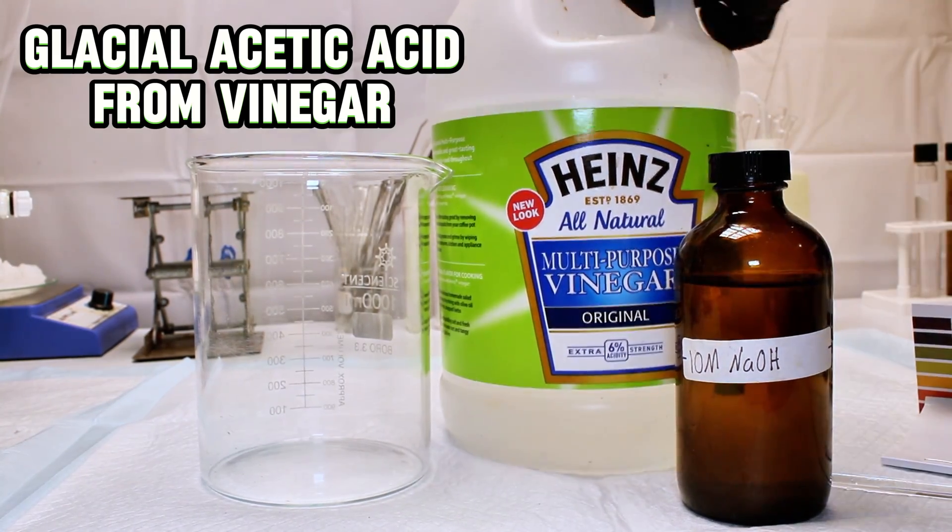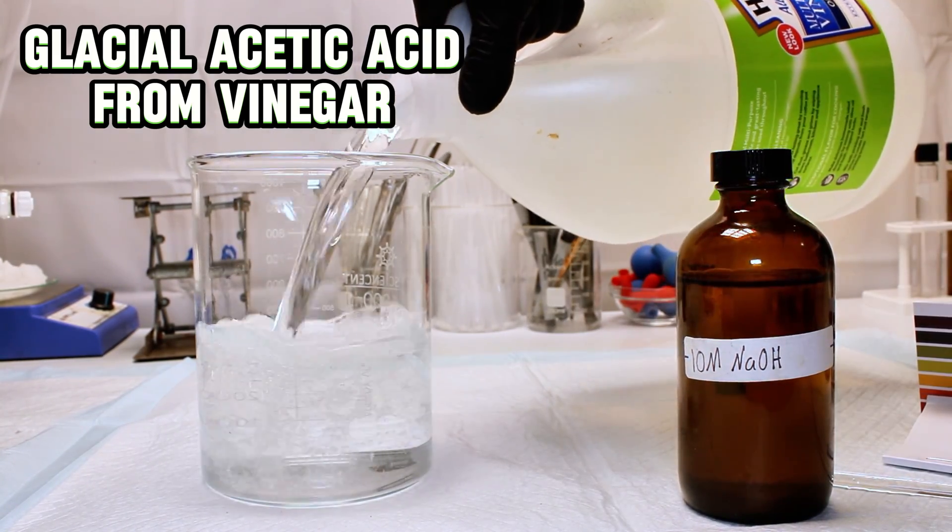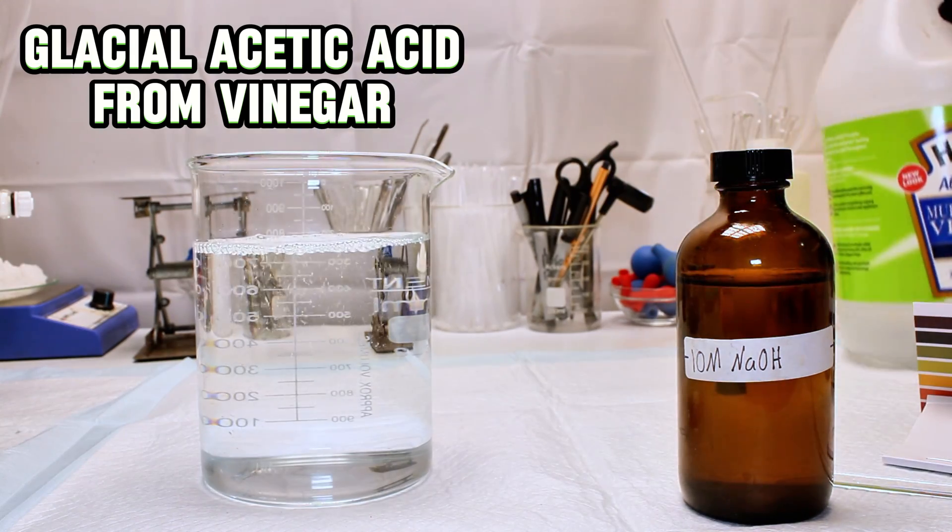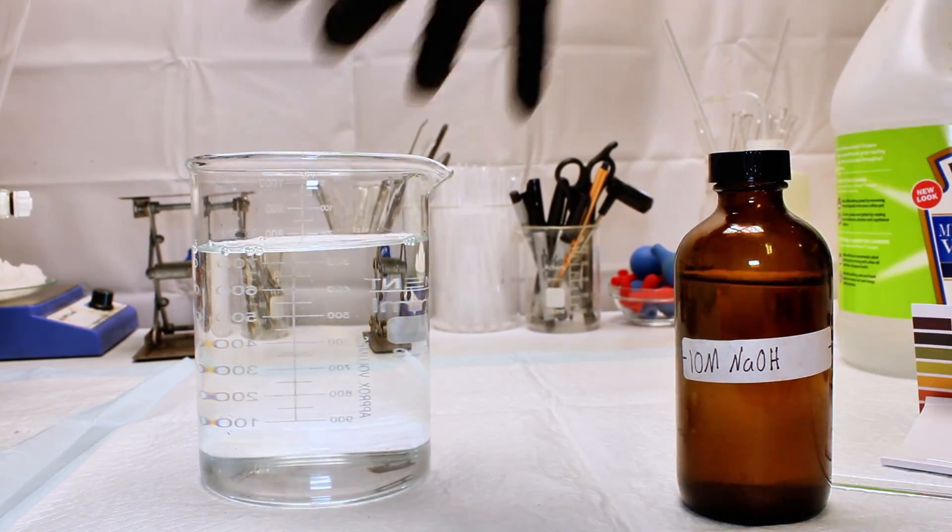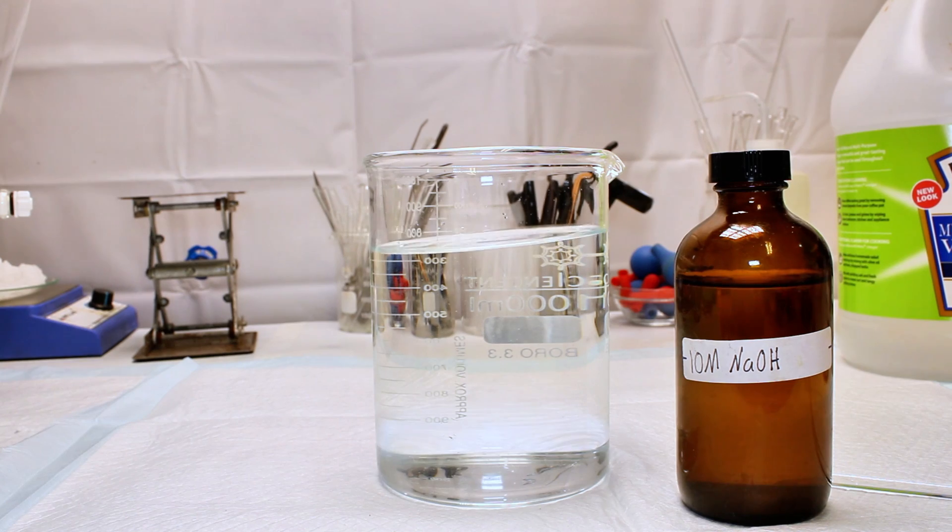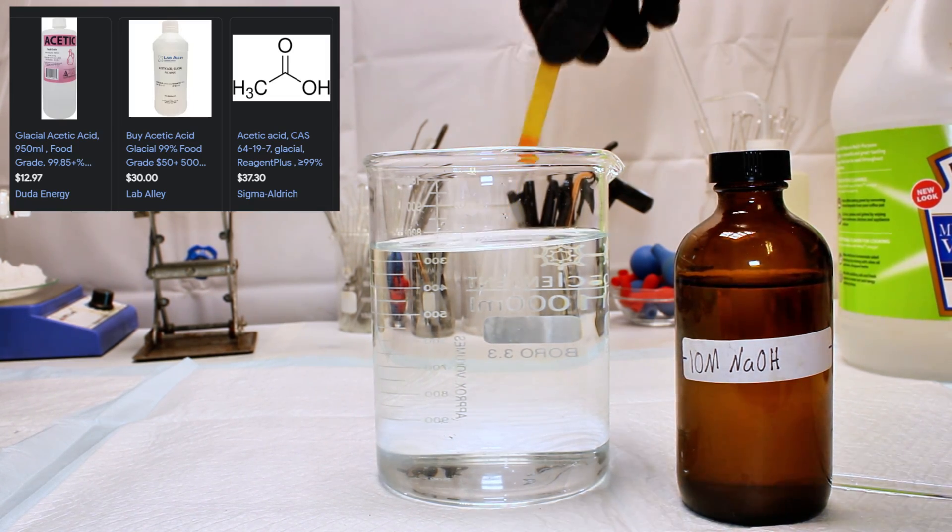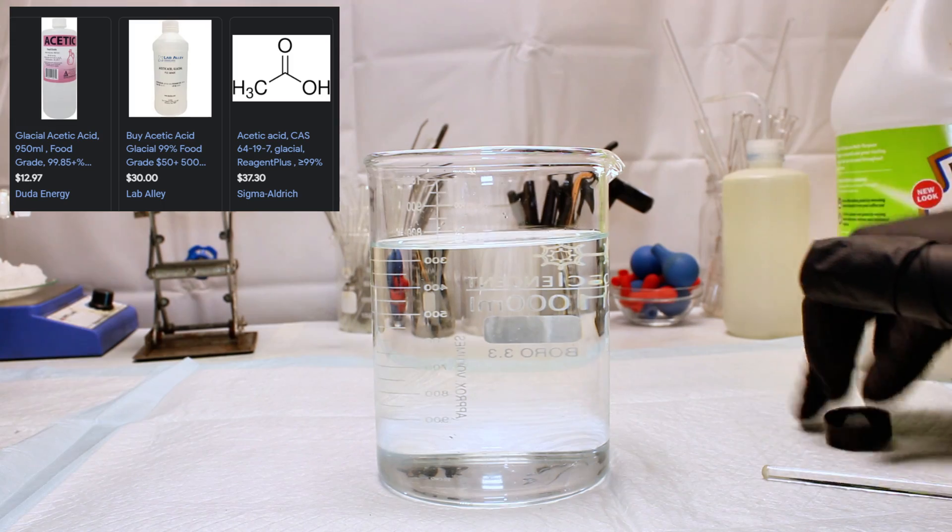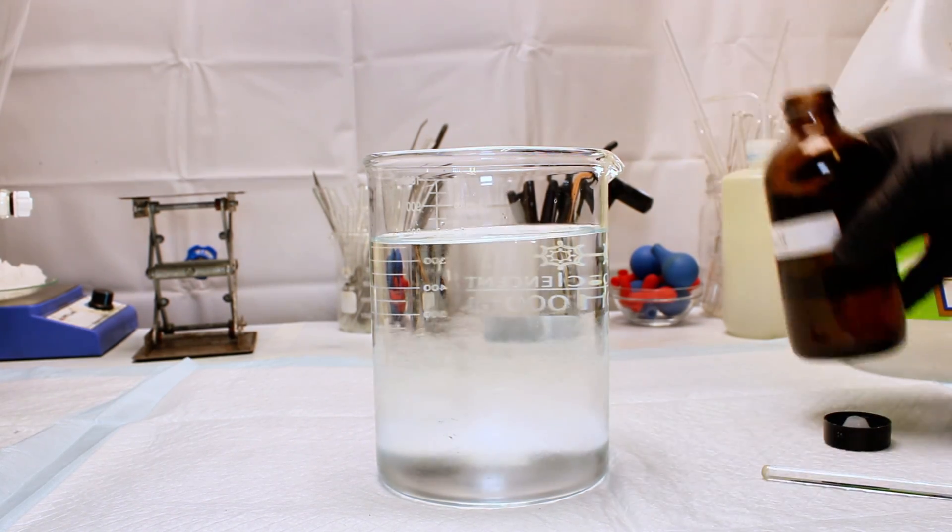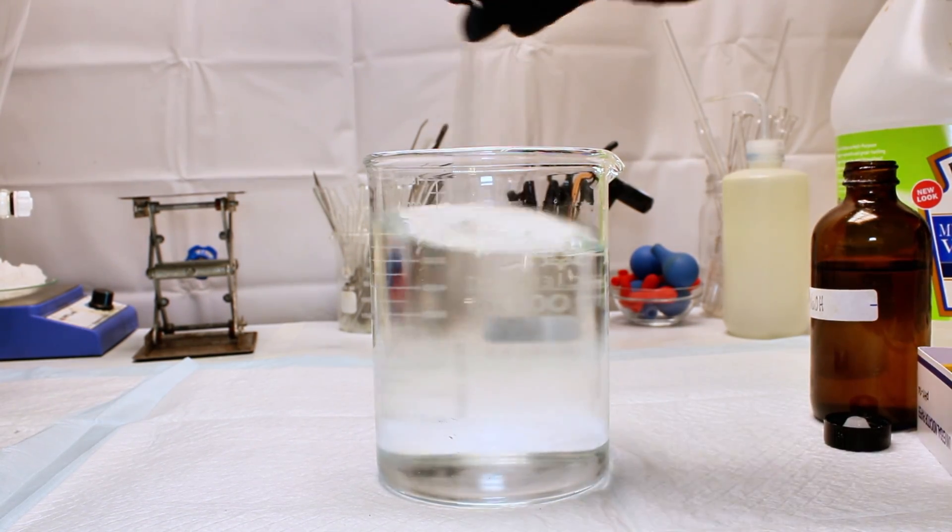Today I'm going to make nearly pure acetic acid from this cheap vinegar I got at the grocery store. Now before I get started, I want to be clear that there are easier ways to make this chemical and it isn't terribly expensive if you just want to buy it outright. However, this is how pure acetic acid was made for hundreds of years, which I think is in of itself interesting.